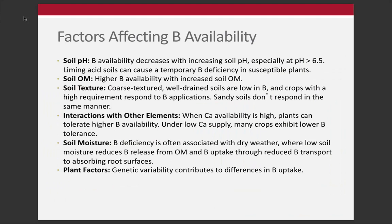Factors affecting boron availability: availability decreases with increasing pH, so we're typically not going to see boron deficiency when pH is less than 6. When we have low organic matter soil, boron availability declines. Other factors include soil texture, interactions with other elements — particularly calcium — and soil moisture and plant factors as well.